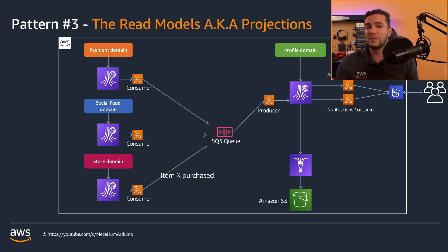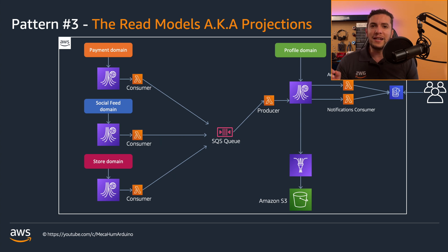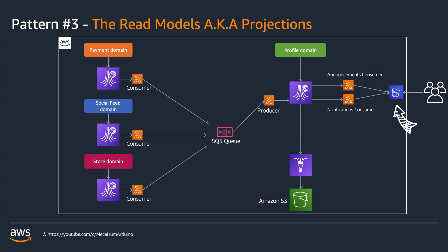Every time a user's item gets purchased, a user's post gets liked, or whatever happens, an update needs to be done on the read model — on the projection — which we were doing before anyway. Every time something changes, we go and update it in the database somewhere. It's just that now we do it with the intention of pushing it as close as possible to the final user, to really get close to the front-end.